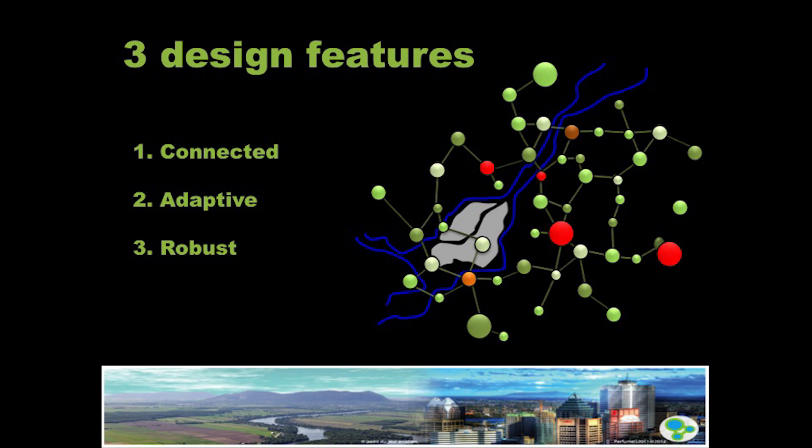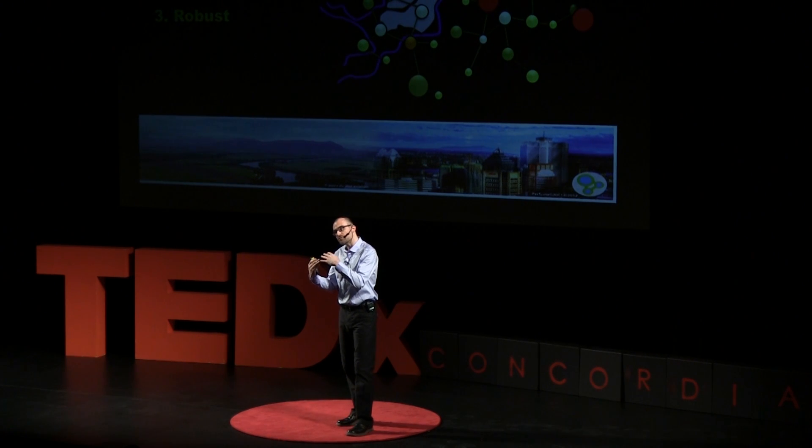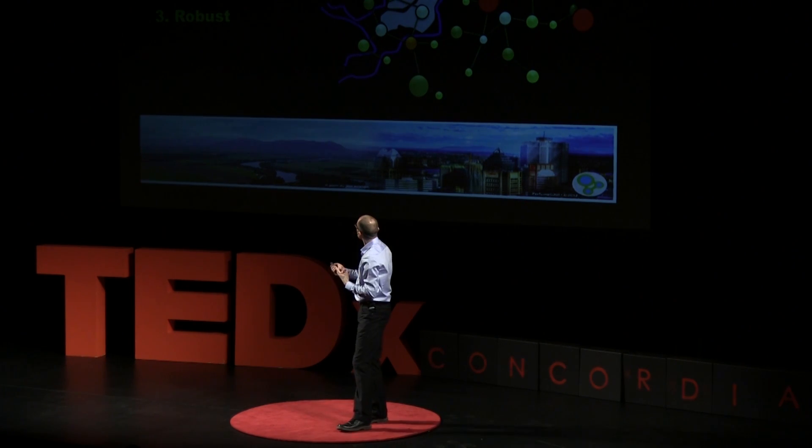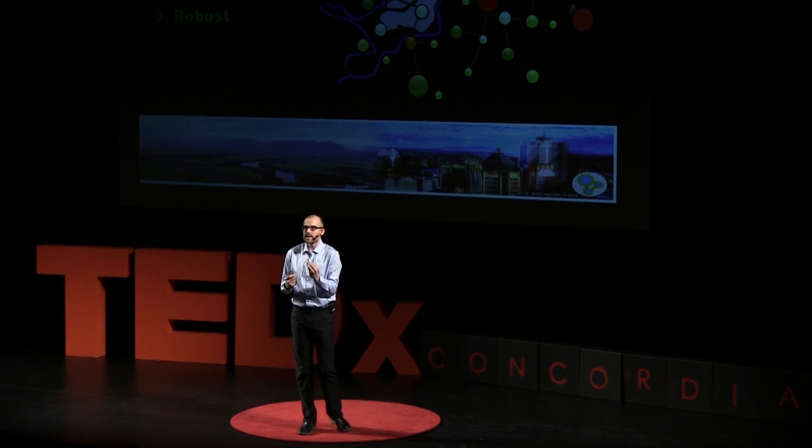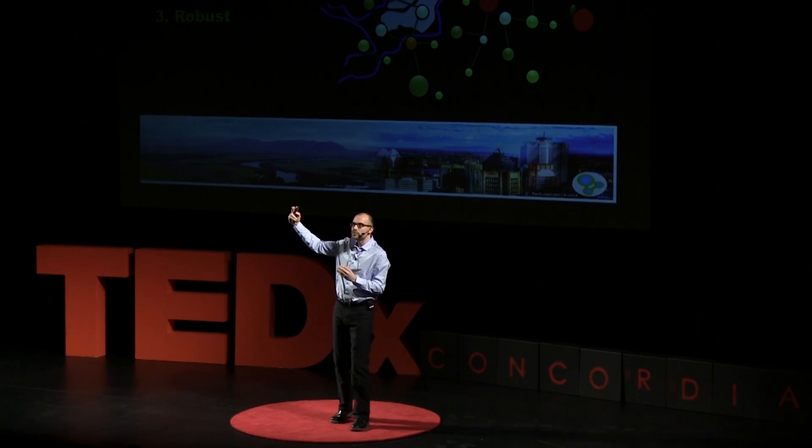Our lab got together, did some brainstorming, and came up with three design principles for what our network should look like. It should be connected, so that species and people can move freely through it — also allowing species to move from south to north under climate change. We want it to be adaptive — functioning in the future when the climate may be 2, 3, or 4 degrees warmer. And we want it to be robust — able to withstand planned or unplanned cutting or loss of forest fragments and still work.